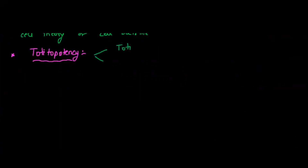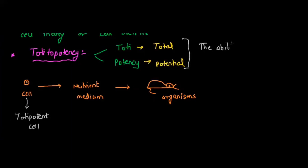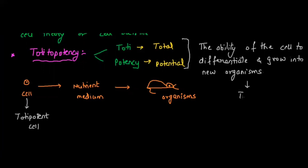Totipotency refers to the total potential — the ability of a cell to give rise to a complete organism when provided proper nutrient medium. Such a cell is called a totipotent cell. In humans, the totipotent cells are stem cells and bone marrow cells. The ability of a cell to differentiate and grow into a new organism is called totipotency. Stem cells are an example, as they can continuously give rise to complete organisms.